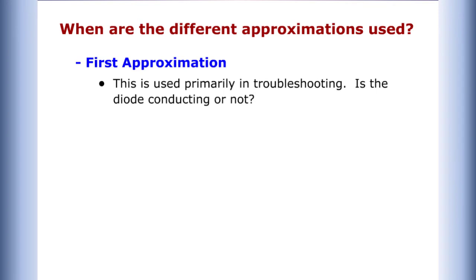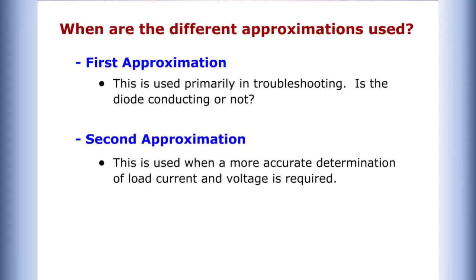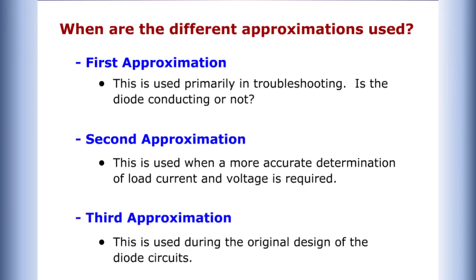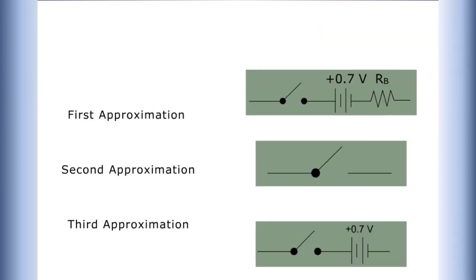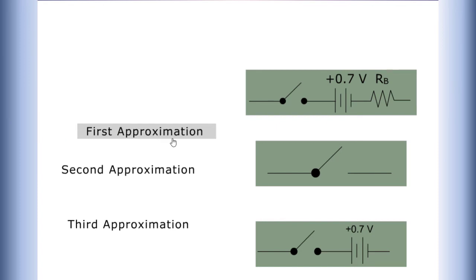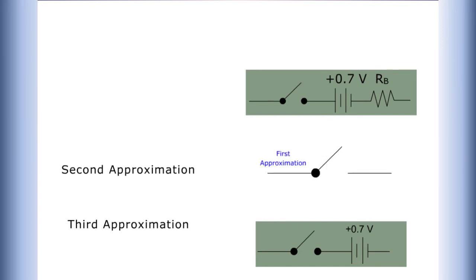When are the different approximations used? The first approximation is used primarily in troubleshooting — is the diode conducting or not? The second approximation is used when a more accurate determination of load current and voltage is required. The third approximation is used during the original design of diode circuits.